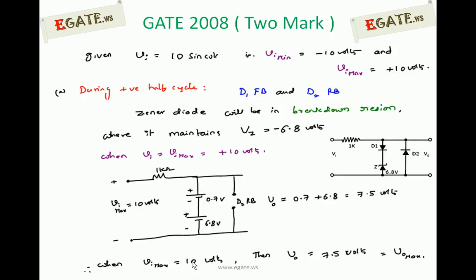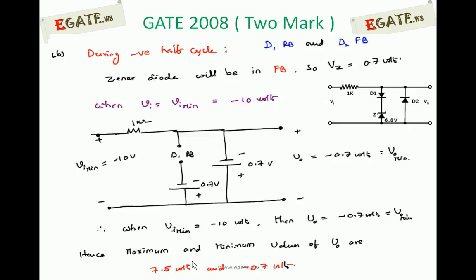Likewise, during the negative half cycle, all voltages of the sinusoidal signal are negative. For the given circuit diagram, diode D1 is reverse biased, diode D2 is forward biased, and the Zener diode is under forward bias because the negative voltage is applied to the N side of the Zener diode. So the Zener diode is also under forward bias.